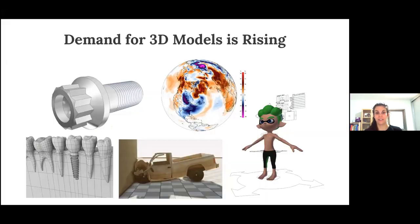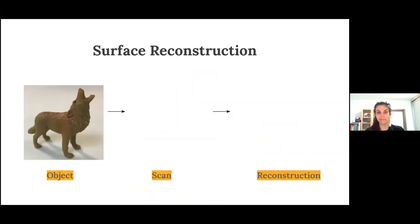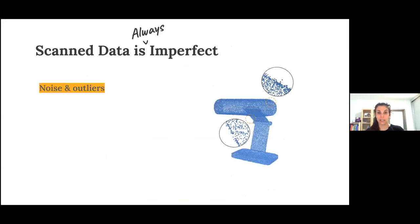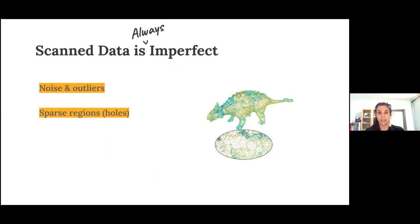3D models are used in many fields from manufacturing to medicine and entertainment, but the demand is growing faster than we can construct them manually. We could obtain a 3D model by scanning a real-world object, but this requires an additional processing step to reconstruct the underlying surface. Surface reconstruction is a difficult problem, which is intractable and ill-posed. Scan data is never perfect — it contains noise and outliers, has regions with sparse samples or holes, and doesn't have enough points sampled on sharp features, which ultimately leads to undesirable reconstruction results.